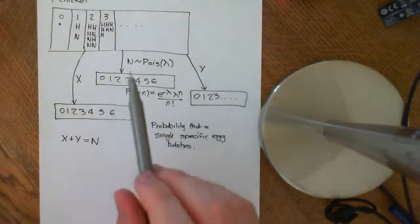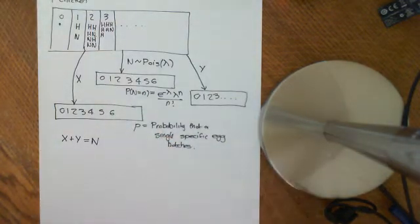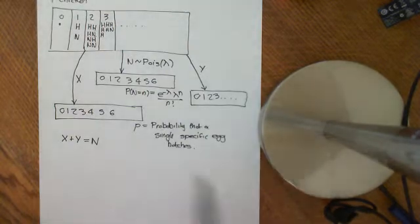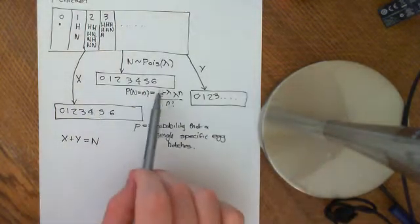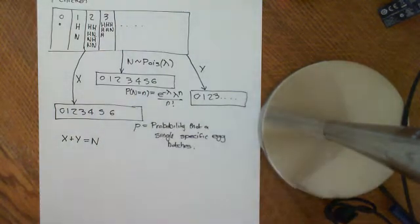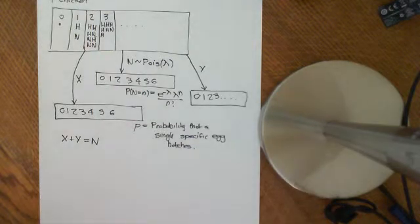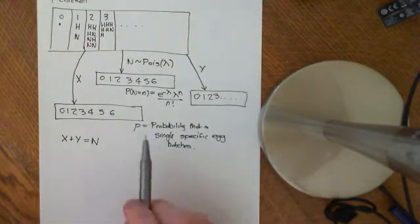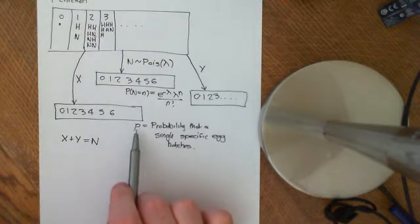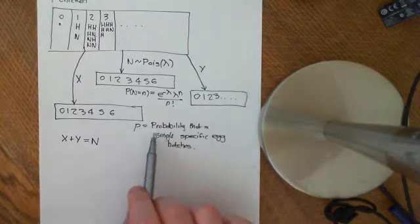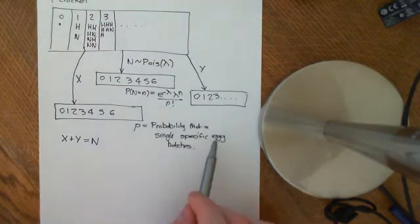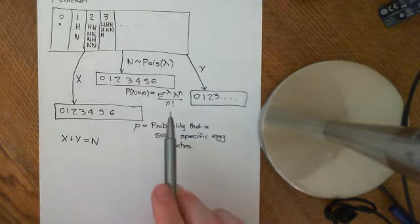The problem is that we have a chicken that's laying eggs. She can lay any non-negative integer value of eggs. And when she's laid those eggs, some of them hatch, some of them don't. The probability that an individual egg will hatch is given by p, which is the probability that a single specific egg will hatch.